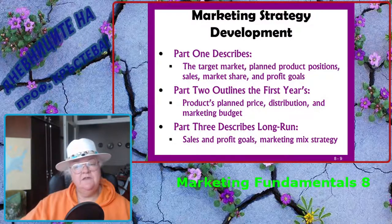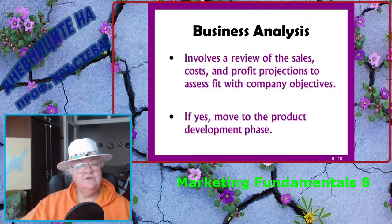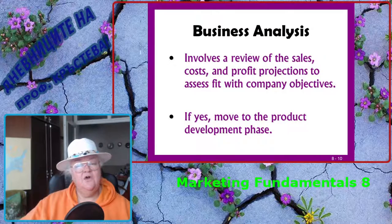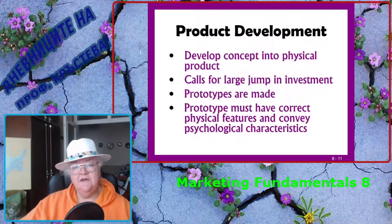Part 2 outlines the first years of existence: the product's planned price, distribution, and marketing budget. Part 3 describes long-run sales and profit goals and marketing mix strategy. Business analysis involves the review of the sales, costs, and profit projections to assess fit with company objectives. If yes, move to the product development stage.